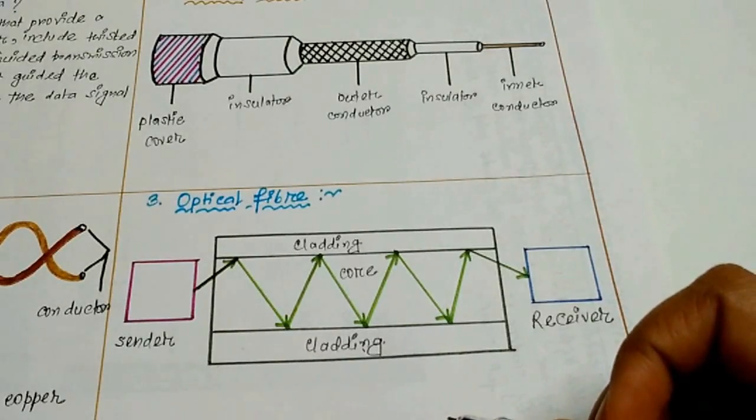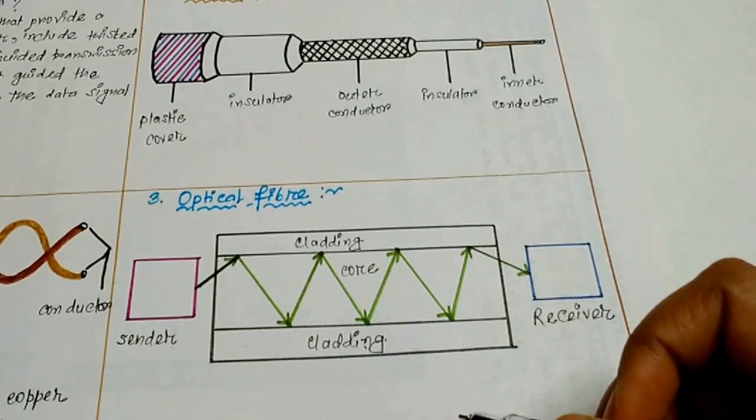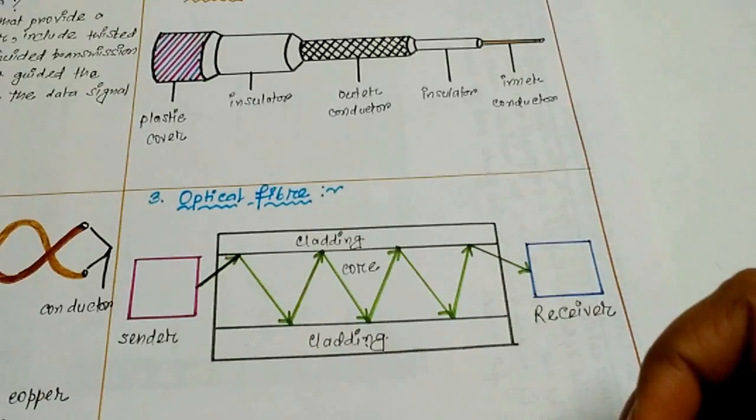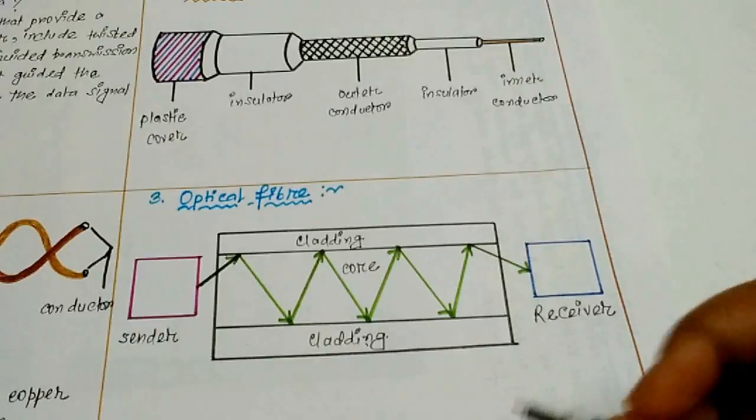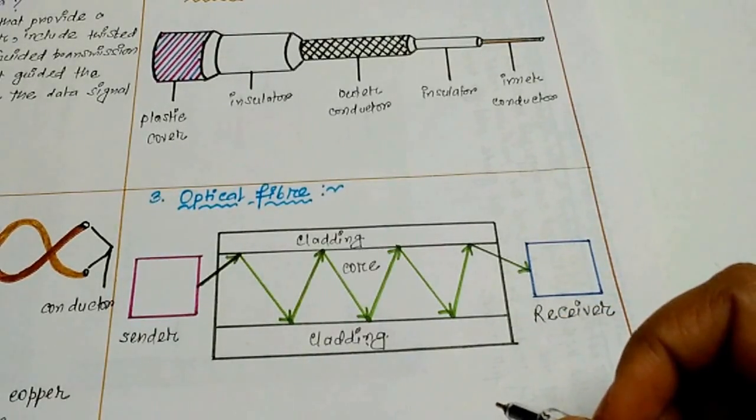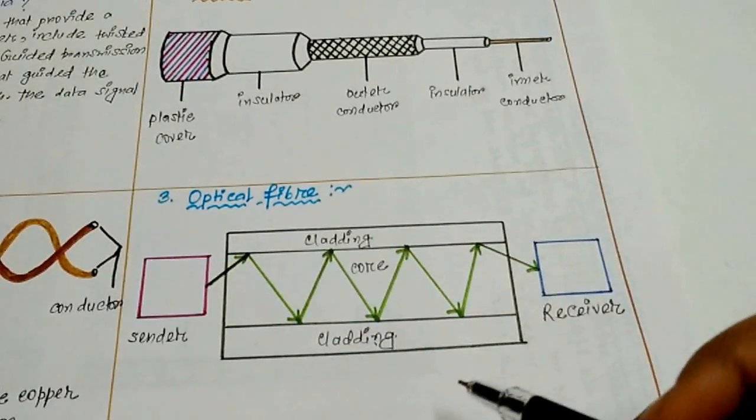Optical fiber cable is made of glass or plastic and transmits signals in the form of light. Optical fibers use the principle of total internal reflection to guide light through a channel. A glass or plastic core which has high density is surrounded by the cladding which has lower density than the core. The difference in density of the two materials must be such that a beam of light moving through the core is reflected off the cladding instead of being refracted into it. Here is the picture.